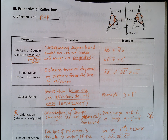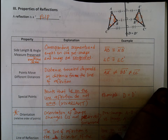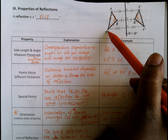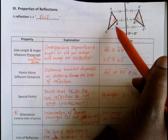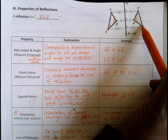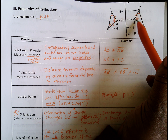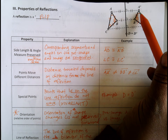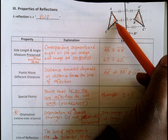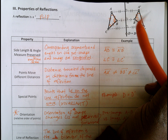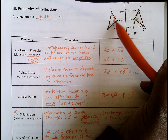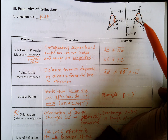The first property is that side length and angle measure are preserved — meaning they remain the same. Corresponding segments on the pre-image and image are congruent. For example, angle C in the pre-image is congruent to angle C prime, as indicated by the two arc marks. B is congruent to B prime, and A is congruent to A prime. The same applies to the sides: side BC is congruent to side B prime C prime.